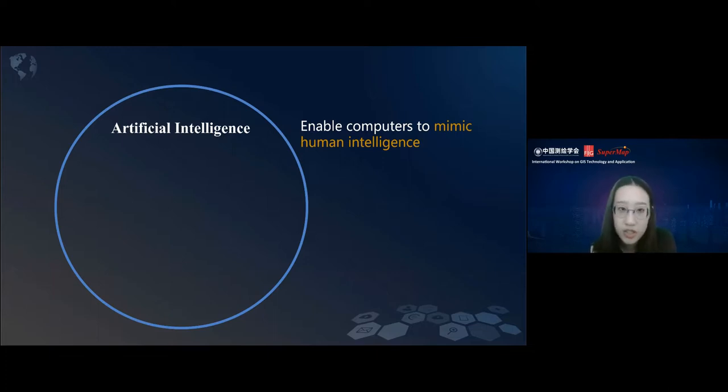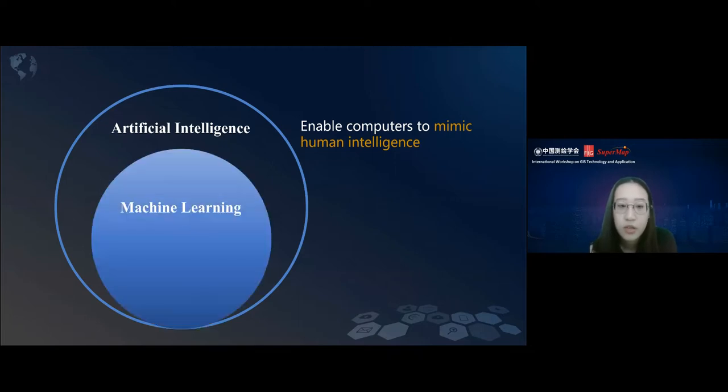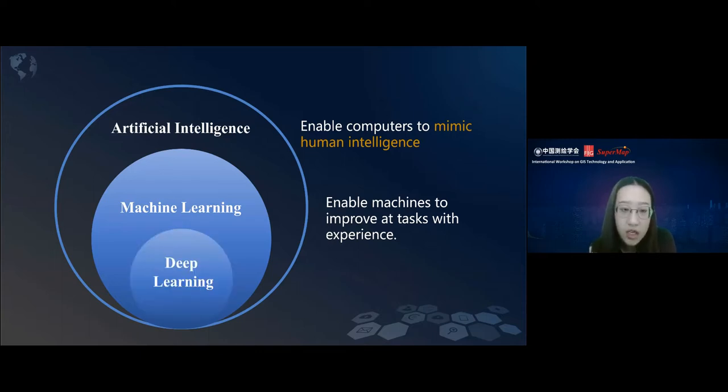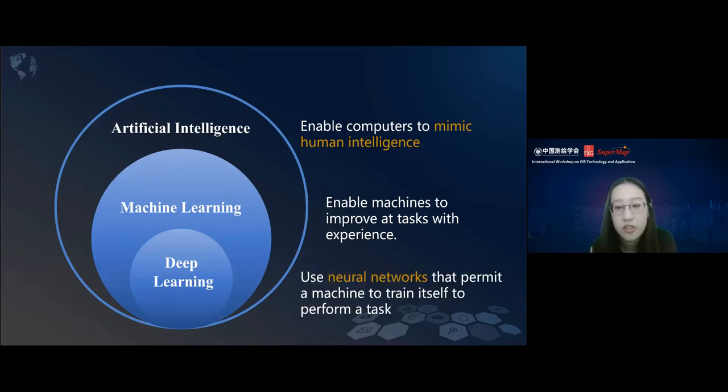When we talk about AI, we actually talk about machine learning and deep learning. Machine learning enables machines to improve a task with experience. Deep learning is a small part of machine learning used in neural networks that permit a machine to train itself to perform the task. Neural networks are inspired by the human brain.